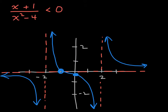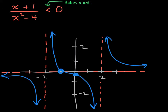Let's do one at a time. The first rational inequality I want you to consider is (x + 1) over (x² - 4), which we already graphed below. This is the graph of this rational function. When is this rational expression strictly less than 0? We have answered similar questions like this with polynomial inequalities. This symbol can be read as: when is the graph below the x-axis? Looking at the picture from left to right, it is below the x-axis for the interval from negative infinity all the way to negative 2.